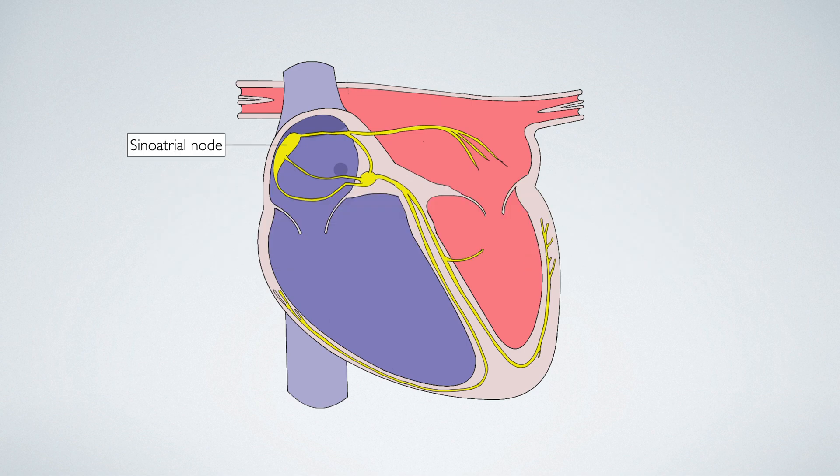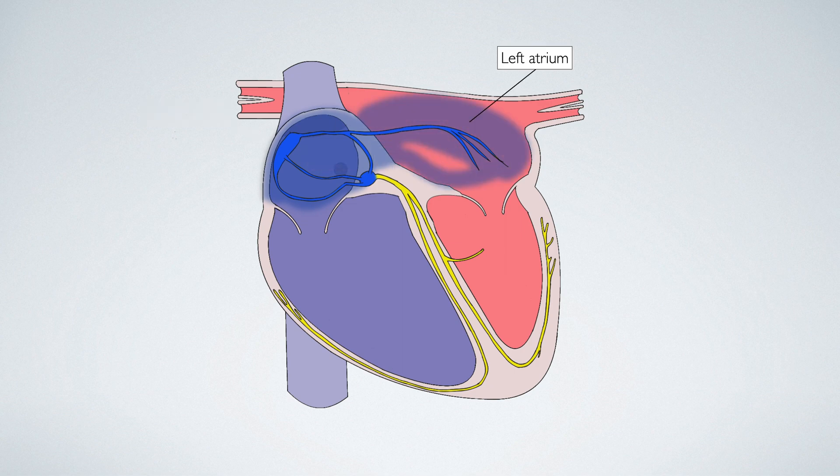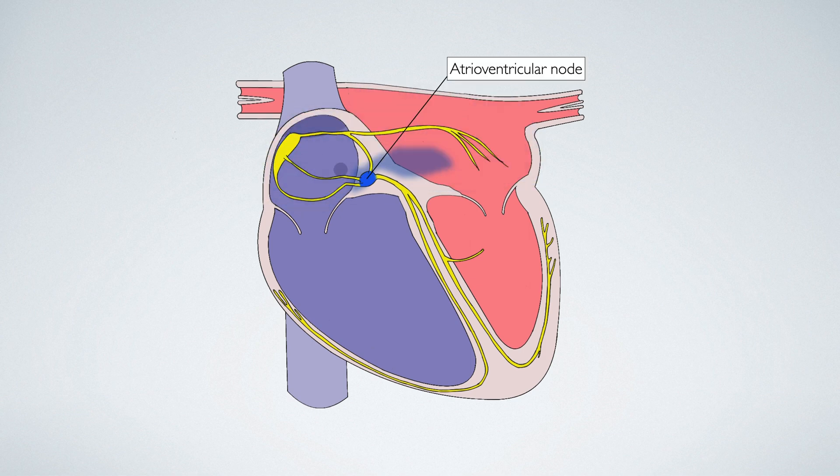Electrical impulses, known as action potentials, are generated in the sinoatrial node. The action potential is propagated throughout the right and left atrium, and this triggers atrial muscle contraction. The electrical activity reaches the AV node quickly, but the conduction through the AV node is delayed for 120 milliseconds.